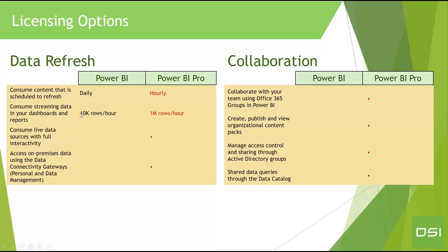For streaming data, there's almost a 10-to-1 difference in the amount of streaming data you can pass through on an hourly basis. Consuming live data is only available within Pro. Accessing data gateways is only available within the Pro version. And collaboration is really only available within Power BI Pro.